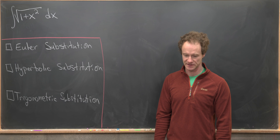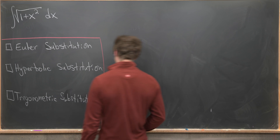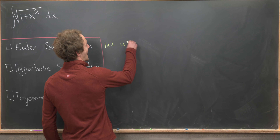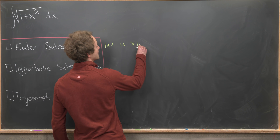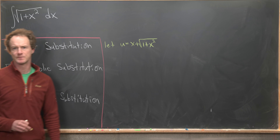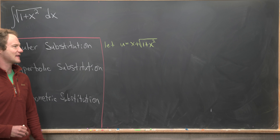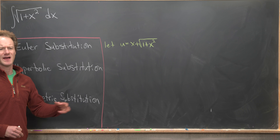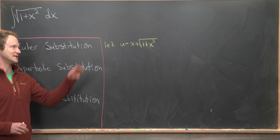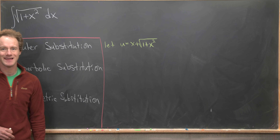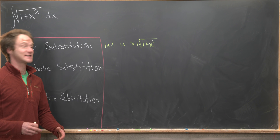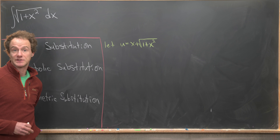Let's jump into Euler substitution first. What we want to do in this case is let u equal x plus the square root of 1 plus x squared. It kind of seems like that comes out of nowhere, but if you know what the antiderivative is — that is, if you know what the answer is — you'll see that something like this shows up in the solution, making it a nice source for our substitution.